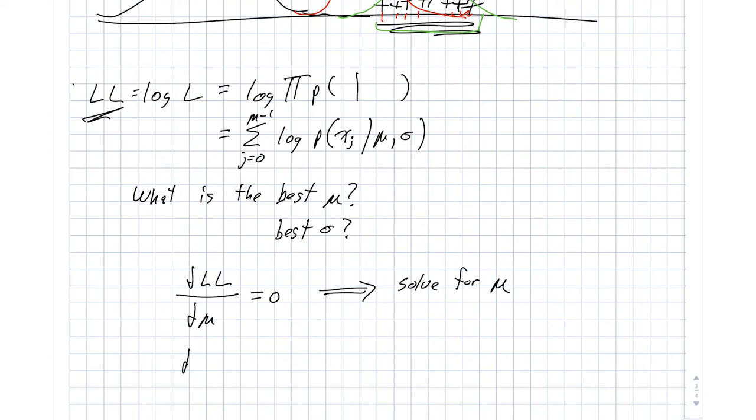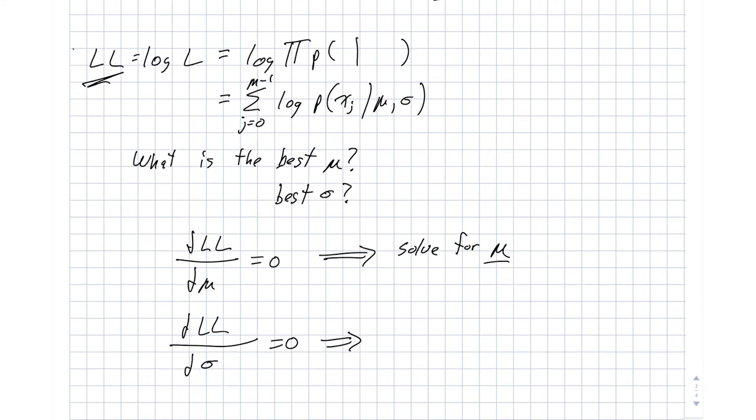And if we do derivative of log likelihood with respect to our sigma and set that equal to zero, at that point already knowing mu, we can solve for sigma. If you go through this process, then this actually gives us our equation for our sample mean and our sample standard deviation.